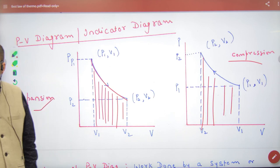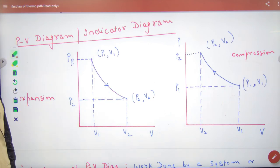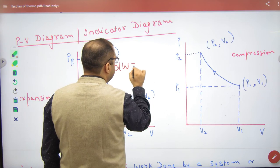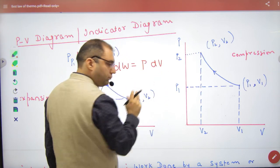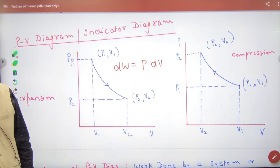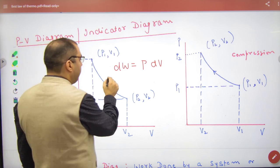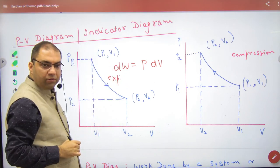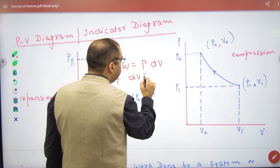One important thing that work done, what did we have learned? PDV. Pressure into change in volume. Rule number one: What is the importance of Expansion? In Expansion what will be dv? Positive.